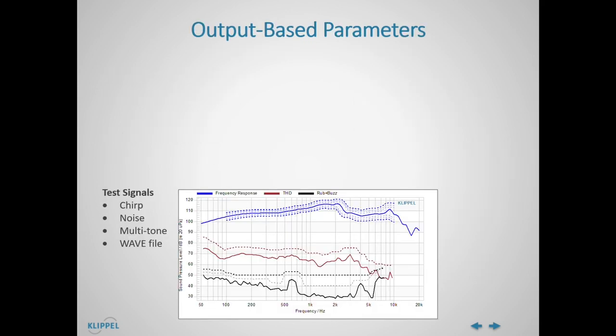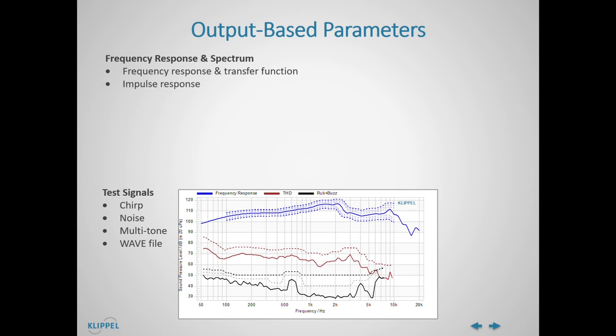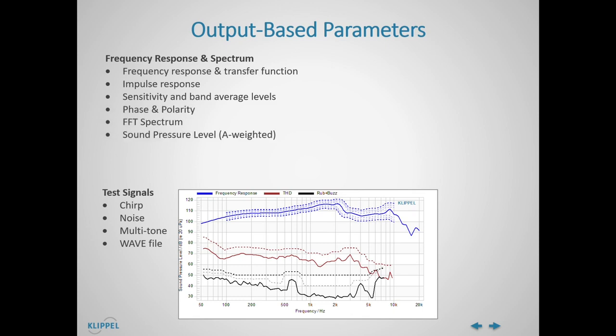Now let us focus on the actual test results provided by the QC software. There are acoustical or output-based results obtained from different stimuli such as chirp, noise, multitone, or even custom WAV file stimuli. The first category is related to the frequency response and output spectrum. It includes the actual frequency response transfer function, the impulse response, sensitivity and band average levels, phase and polarity, FFT spectrum, and sound pressure level — which can be A-weighted optionally.